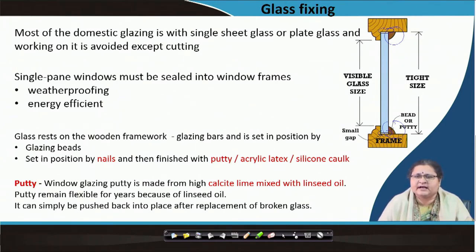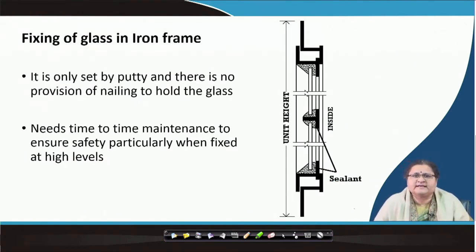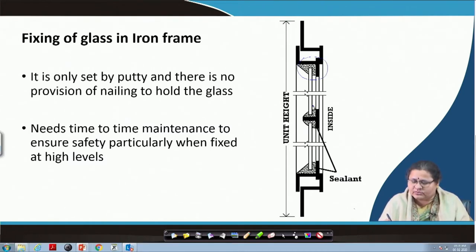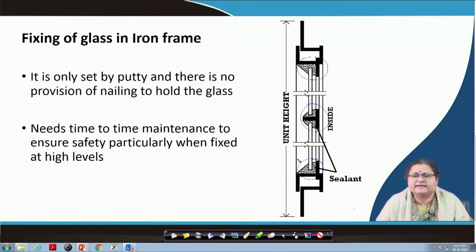Visibility is given and the glass is in position. Moving to the next slide, we see the fixing of glass on an iron frame. Here you can see some section details — a Z-section and a T-section which form the frame. You can see the sealants into which the glass is being embedded. After holding the glass, it is the same putty which is holding the glass in position. However, here there are no nails being fixed because you cannot fix nails within the iron section — it is only the putty holding the glass.